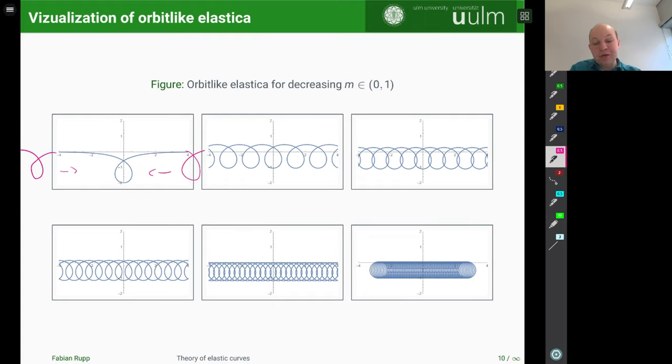And if you decrease m even further, then they will at some point start to overlap and overlap more, overlap even more. And eventually, what this picture does not exactly say, but what you can already imagine, these loops overlap so much that eventually, or in the limit as m goes to 0, they will converge to a circle in some sense. And this is then also an elastica. So kind of the orbit-like elastica are interpolating between the borderline elastica and the circle.